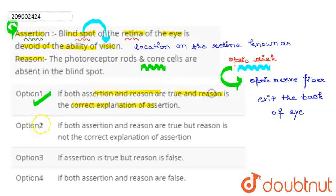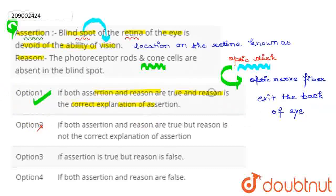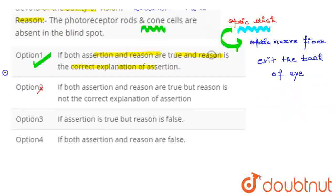The second option says both assertion and reason are true, but reason is not the correct explanation of assertion. This option is the wrong answer.